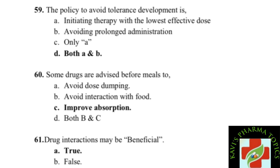Question 58: the policy to avoid tolerance development. Option A: initiating therapy with the lowest effective dose. Option B: avoiding prolonged administration. Option C: only A. Option D: both A and B. The policy to avoid tolerance development includes initiating therapy with the lowest effective dose and avoiding prolonged administration — so both A and B are the right answer.